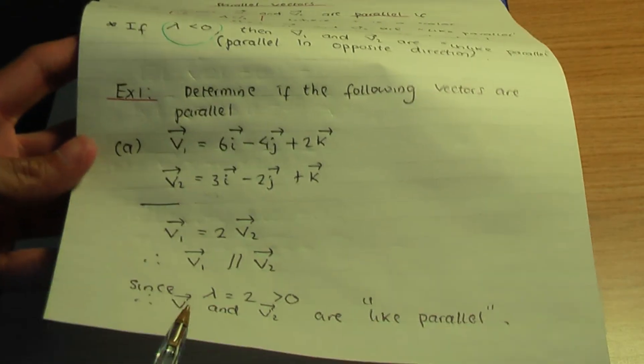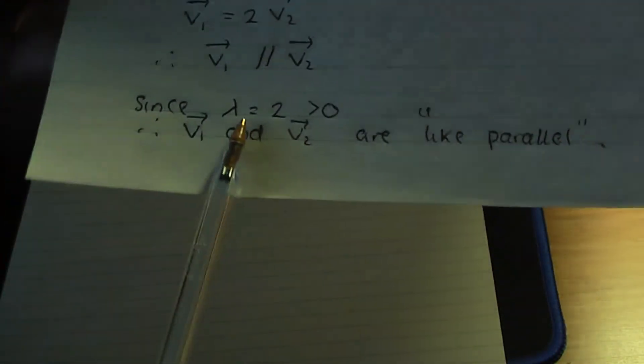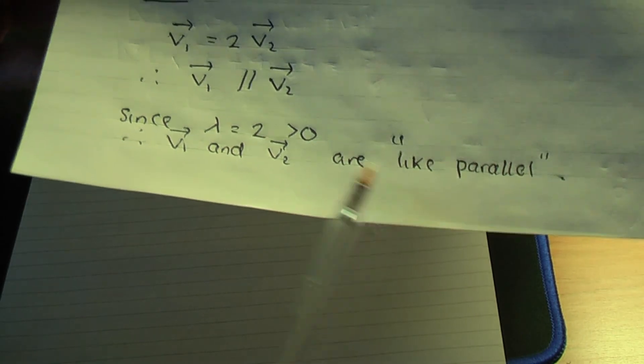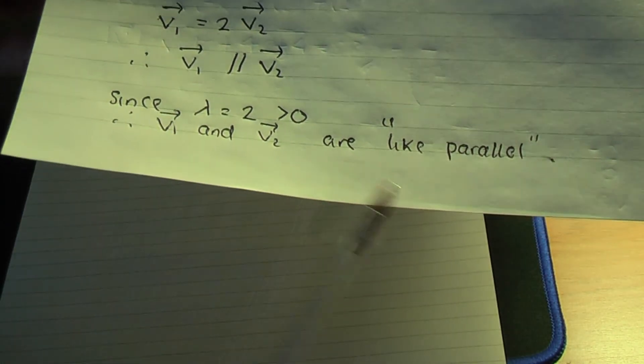So this is the method in order to show whether your two vectors are parallel or not. In particular with part a, the vectors were parallel, and the scalar lambda is plus 2, which is positive. Remember, if the scalar is positive, they're like parallel; if the scalar is negative, it's unlike parallel. Like parallel means parallel in the same direction; unlike parallel means parallel in opposite directions. That ends this video — I hope you found it helpful, and I hope to see you in the next video. Thank you.